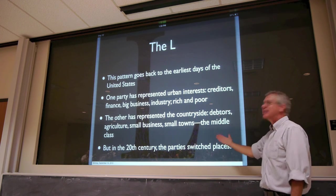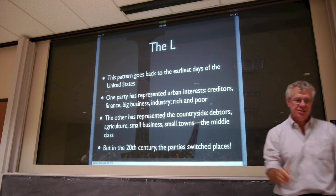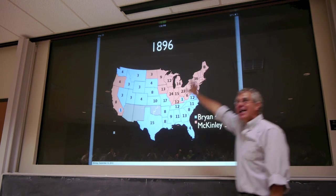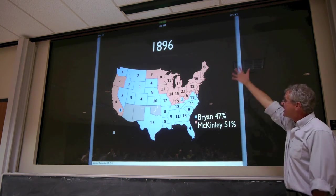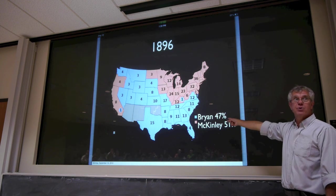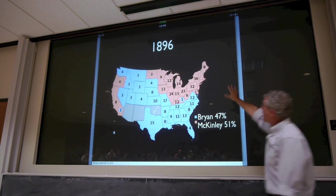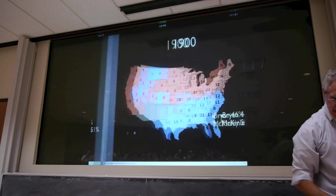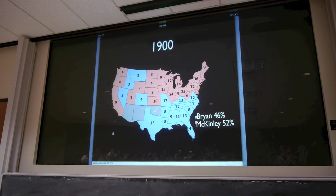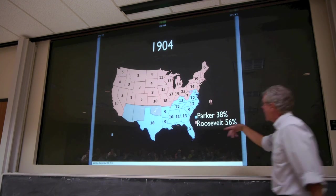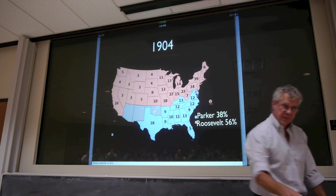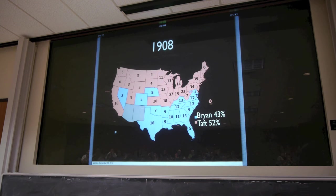In the 20th century, the parties switched places. Take a look at 1896. There's the same L-type pattern, but notice now it's a blue L — it's a Democratic L. And it's the Republicans who were stronger in the Northeast and the West Coast. The same thing is more or less true in 1900. In 1904 it looks like a north-south divide, but it's really just because Teddy Roosevelt was so popular in the West. And in 1908 you can see the patterns start to reemerge.